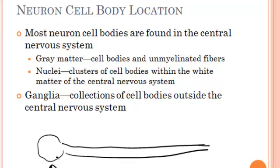This cell body is the part that's in the central nervous system. You may have a cell body located in the spinal cord, and then from there the axon will leave the spinal cord and go into the peripheral nervous system, taking the signal to wherever it needs to go.